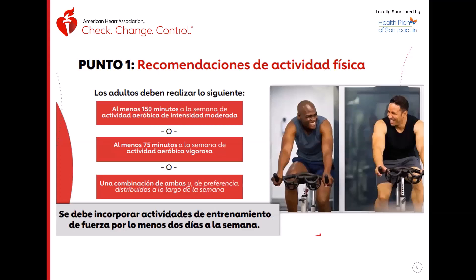Estas son las recomendaciones de actividad física para adultos. Deben realizar al menos 150 minutos a la semana de actividad aeróbica de intensidad moderada. Vamos a explicar qué son las diferentes intensidades: vigorosa y también la intensidad moderada. O al menos 75 minutos a la semana de actividad aeróbica vigorosa, o una combinación de ambas, de preferencia distribuidos a lo largo de la semana. Si se deben incorporar actividades de entrenamiento de fuerza por lo menos dos días a la semana.